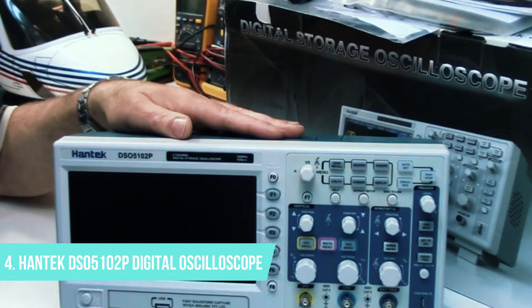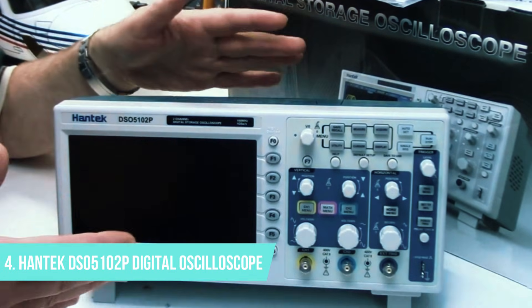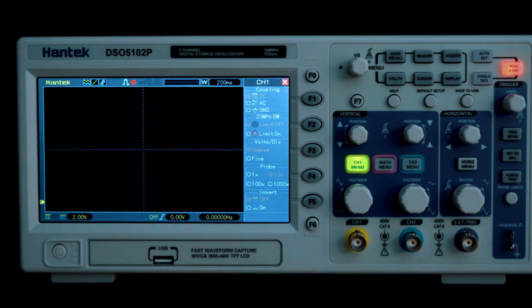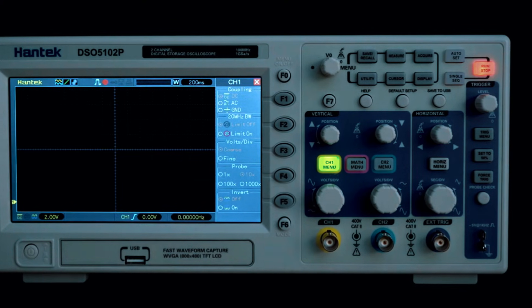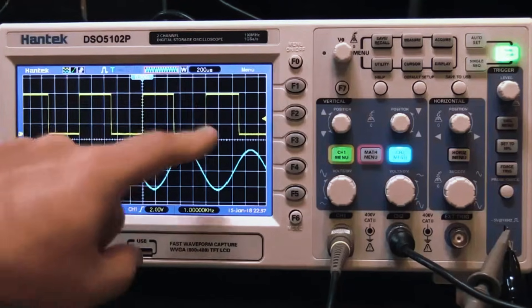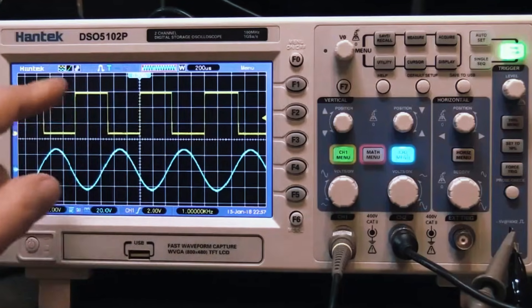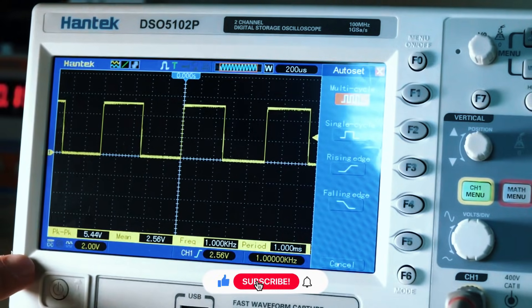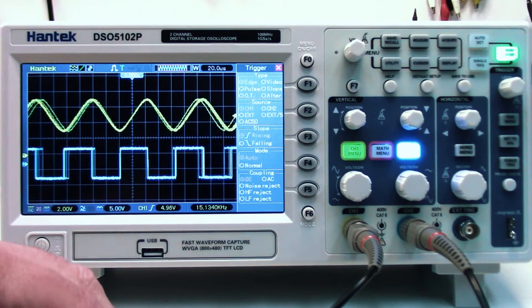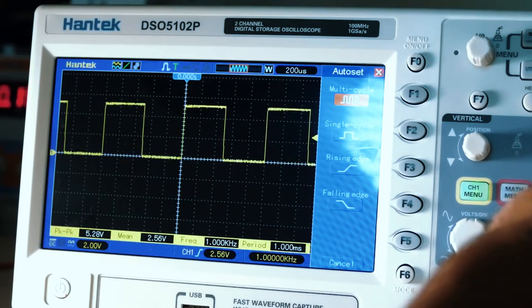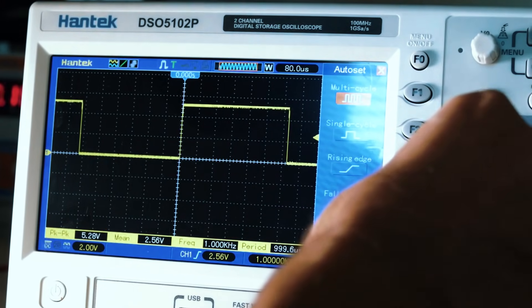Number 4: Hantec DS-05102P Digital Oscilloscope – Best for Entry-Level Professionals. Moving up the ladder, we've got the Hantec DS-05102P, a 100MHz oscilloscope that's perfect for entry-level engineers and serious DIYers. It's a step up from basic models but still affordable enough for those who need professional features without the premium price tag. Whether you're working on small electronics projects, debugging circuits, or learning advanced waveform analysis, this model strikes the right balance between functionality and cost-effectiveness.